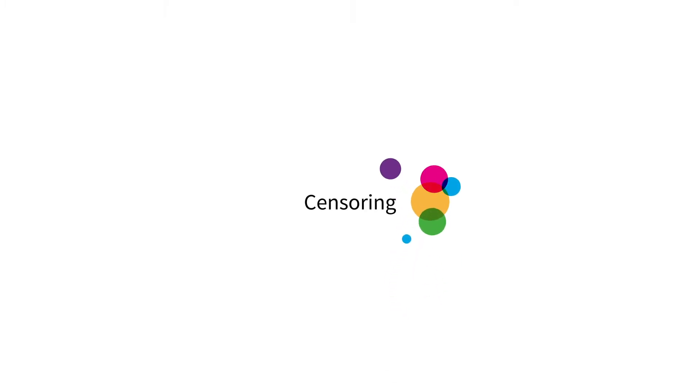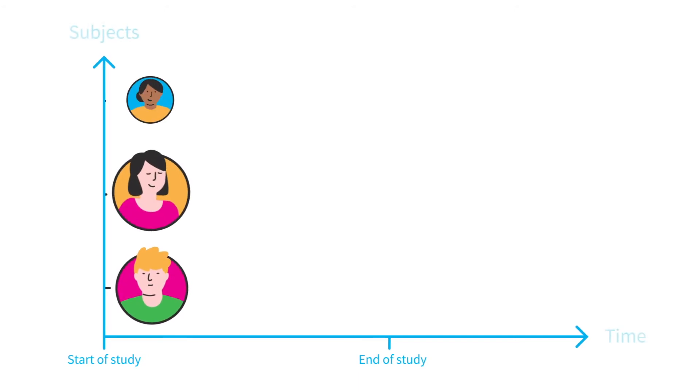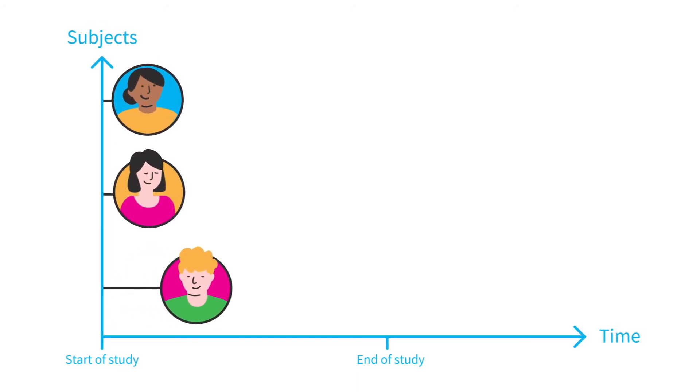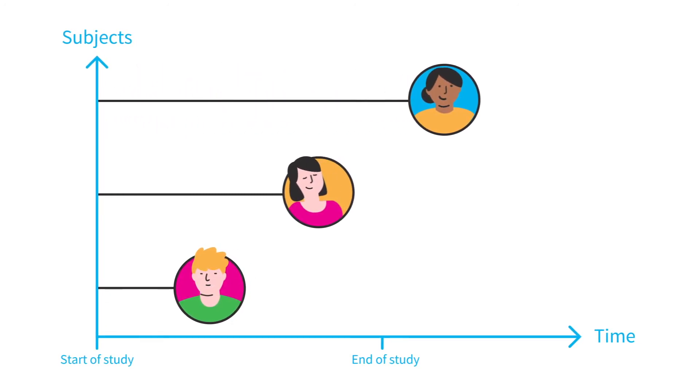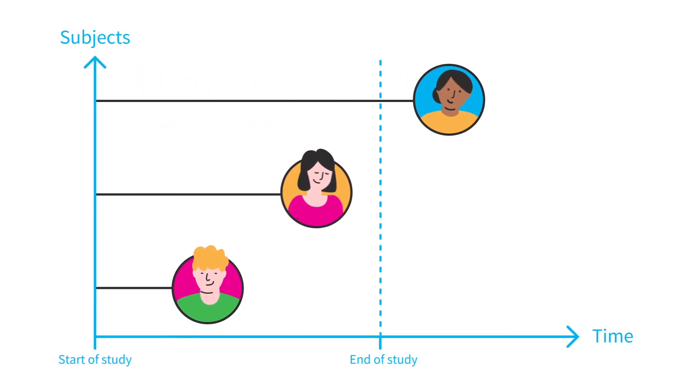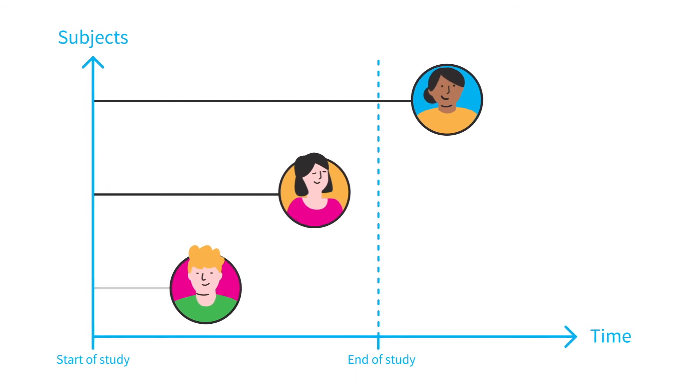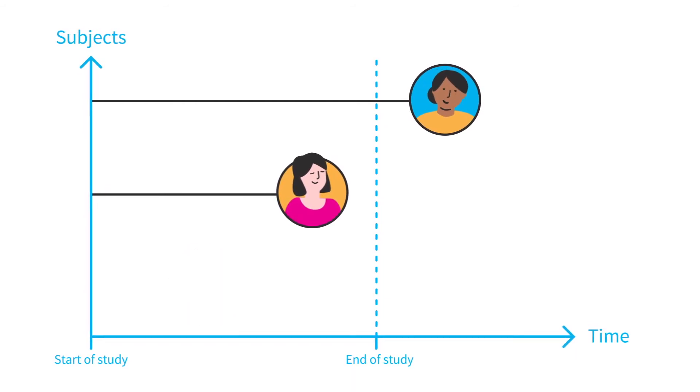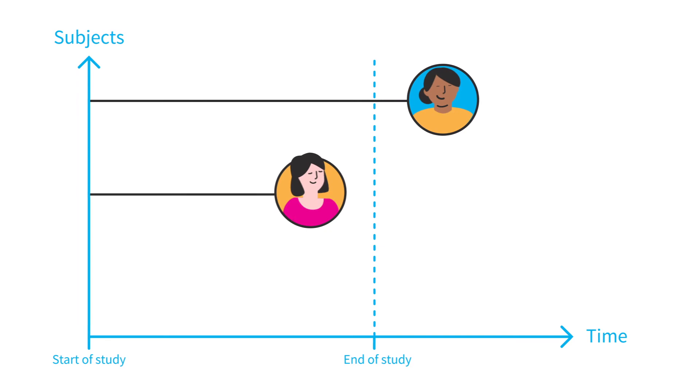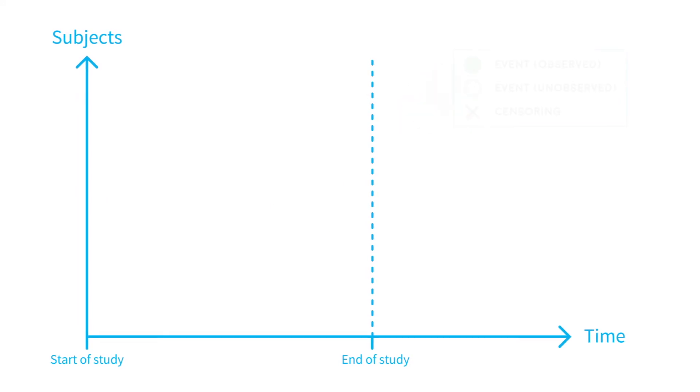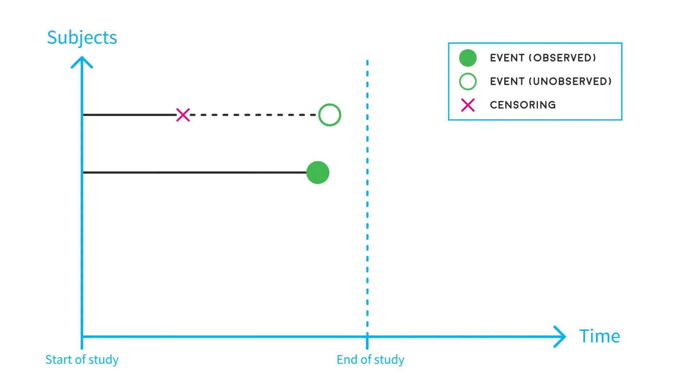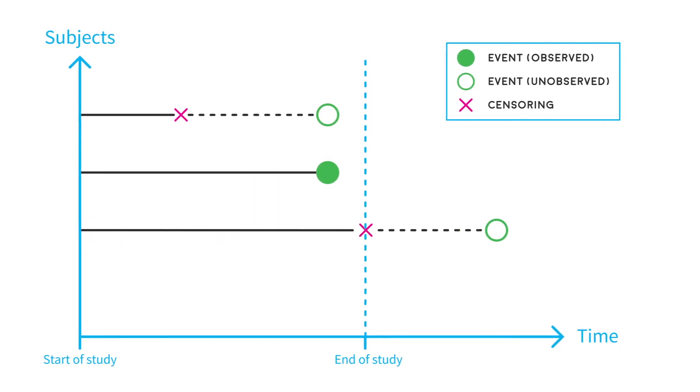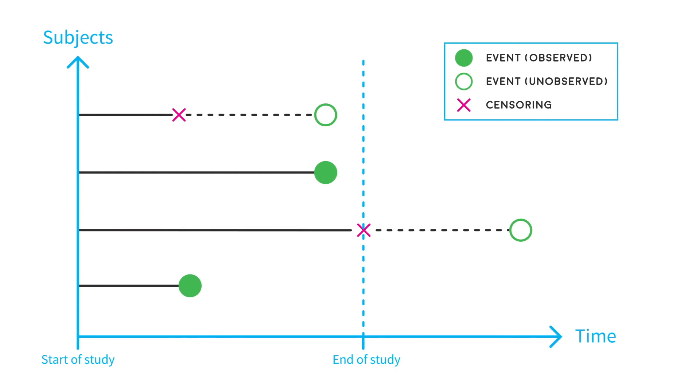Censoring. Within a study, for some participants, the time of event will not be known because either the analysis is carried out, or the study ends, before they have had the event, or the participant drops out of the study before experiencing the event. This is called being censored. As we do have some information on censored participants, we know that their survival time is greater than their last observed follow-up time. We want to include them in our analyses.